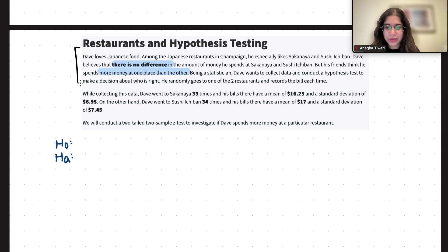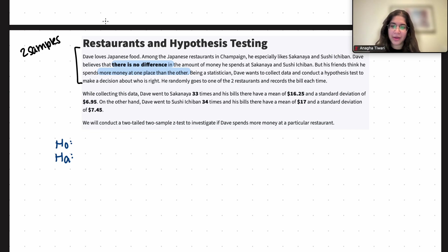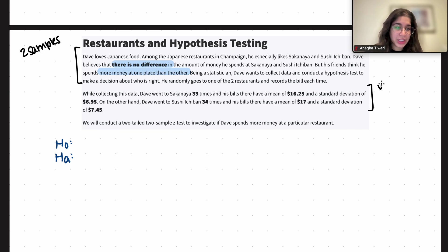Within this first paragraph, we know that there are two samples going on, because there are two restaurants and he thinks there is no difference in the amount of money he spends at each of these two restaurants, but his friends think that there is a difference. The second paragraph basically describes our values for our samples — these are the sample statistics that we have collected.